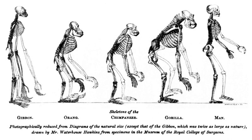Universal common descent through an evolutionary process was first proposed by the British naturalist Charles Darwin in the concluding sentence of his 1859 book On the Origin of Species.